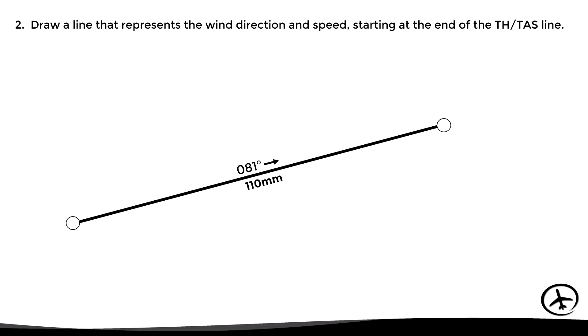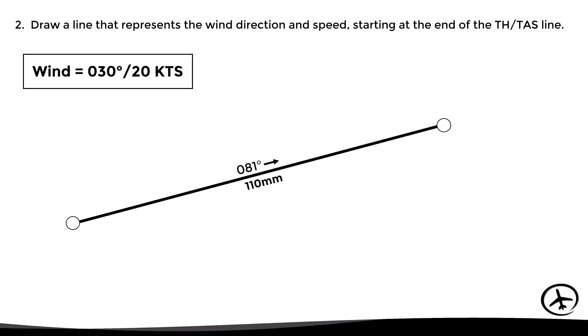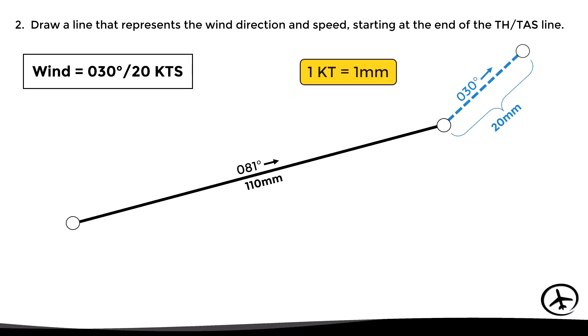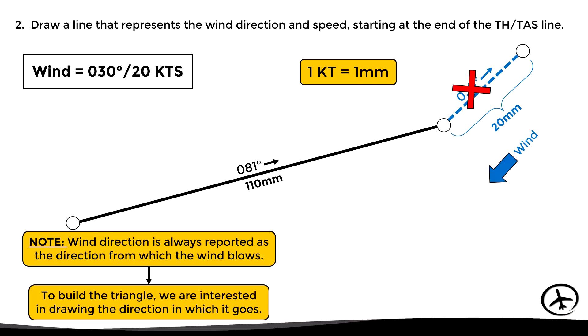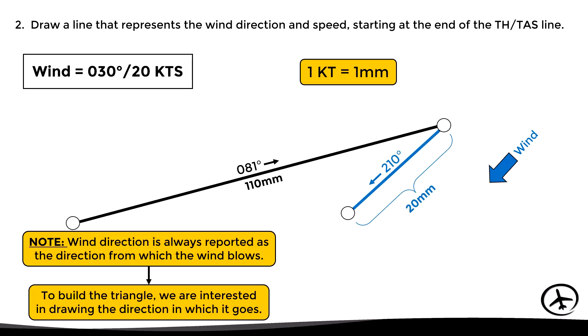The second step is to draw a line that represents the wind direction and speed, starting at the end of the heading/true airspeed line drawn previously. For example, if the reported wind is 030 degrees at 20 knots, we might instinctively draw a line toward 030 — however, this is not correct. Wind direction is always reported as the direction from which the wind blows, so we must draw the direction in which it goes, because that is the direction in which it will push the aircraft.